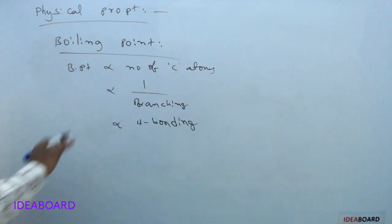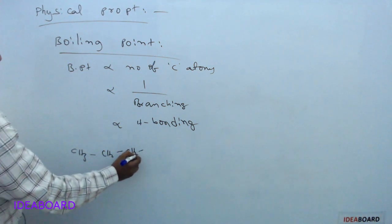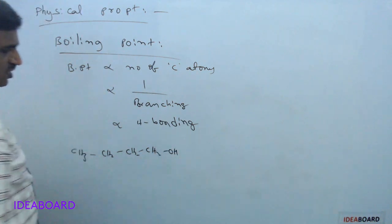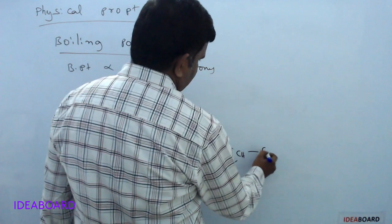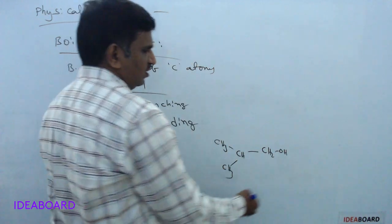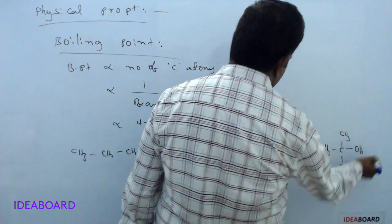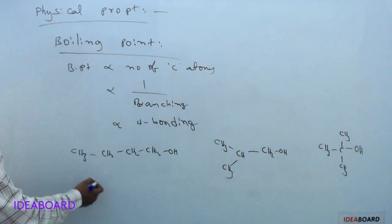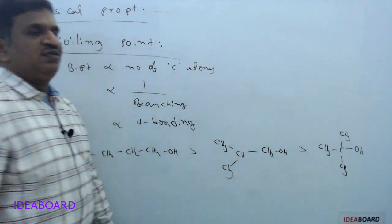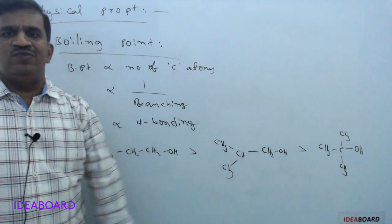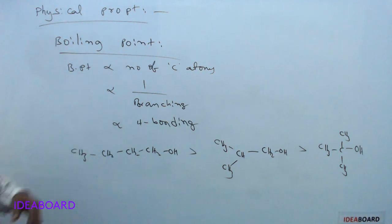With the same carbon atom number, when branching increases, boiling point decreases. For example: n-butyl alcohol (CH3CH2CH2CH2OH), isobutyl alcohol, and tertiary butyl alcohol (C(CH3)3OH). N-butyl alcohol has a higher boiling point than isobutyl, which is higher than tertiary butyl, because greater branching leads to less close packing and lower boiling points.